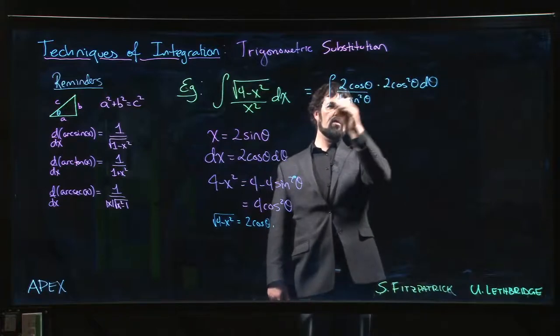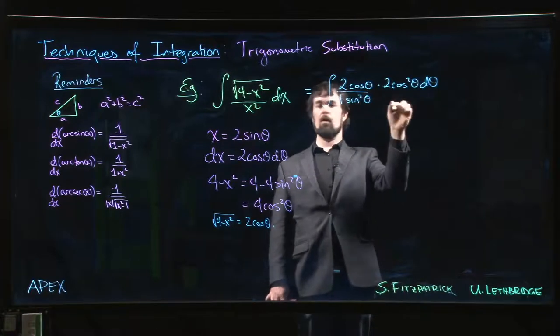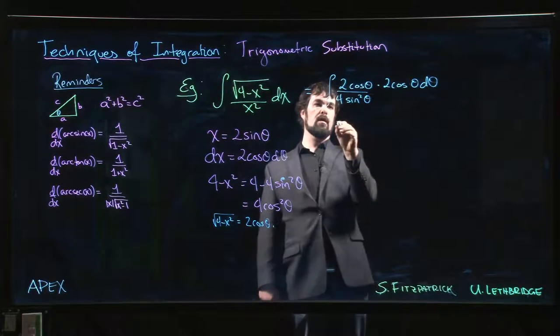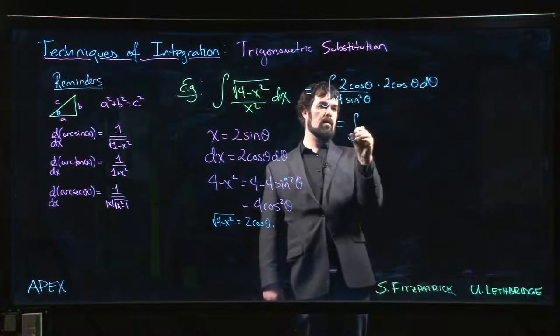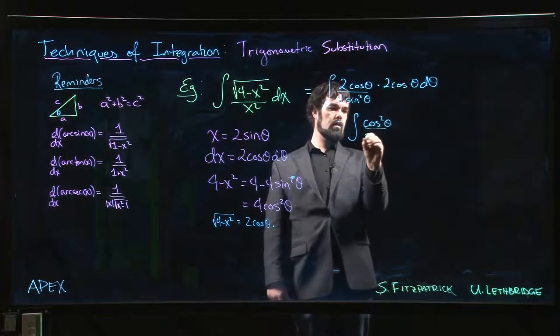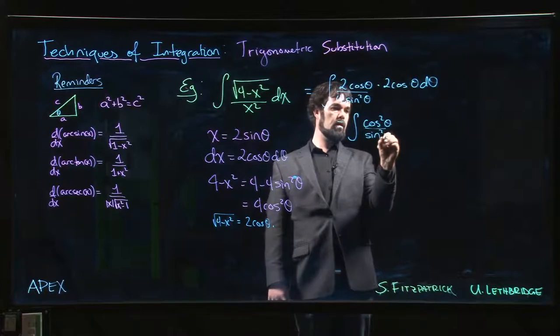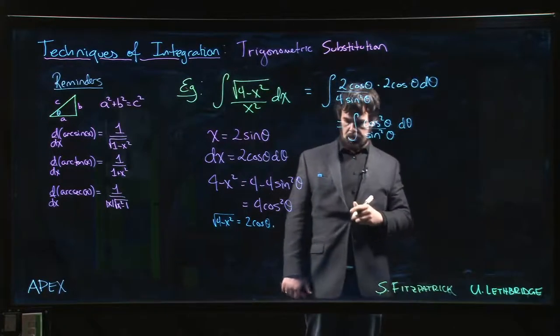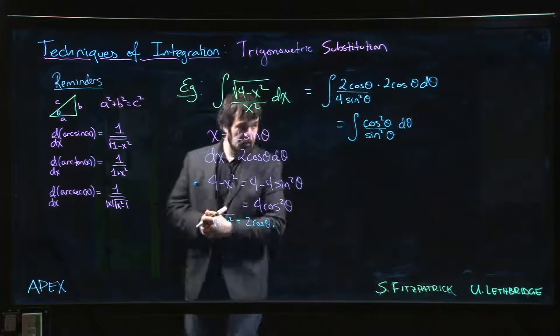Constants cancel, right? 2, 2, 4. Oh, sorry. Thinking ahead. That's just cos theta. So this time we've got cos squared theta over sine squared theta. Gives us cotan squared.